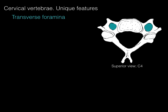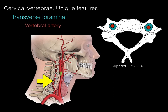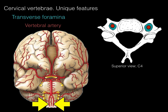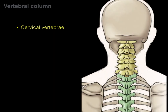Within these transverse foramina are the vertebral arteries, which arise from the subclavian arteries and supply the back of the brain. In a lateral view of C6, you can see the transverse foramina. At every segmental level, the vertebral artery traverses those transverse foramina up to the suboccipital triangle and into the brain. The two vertebral arteries come together to form the basilar artery, supplying the posterior part of the brain.